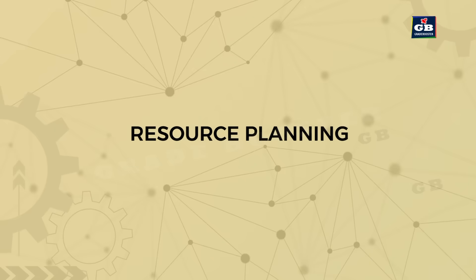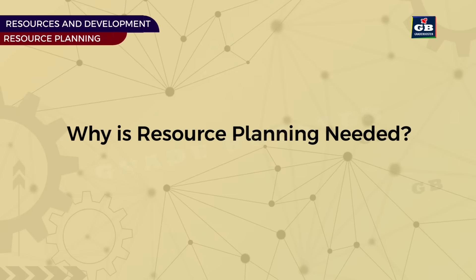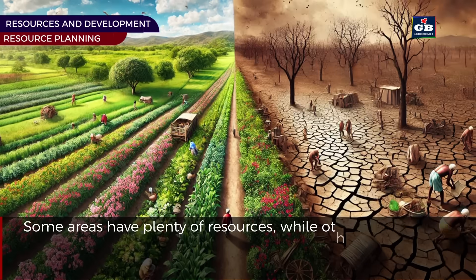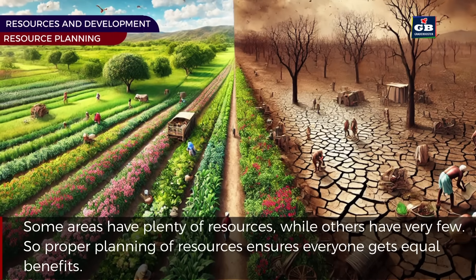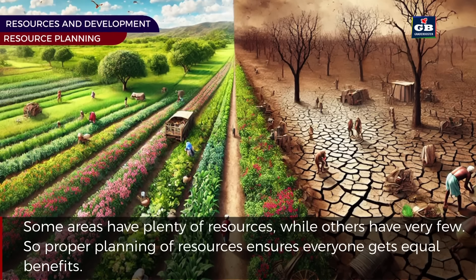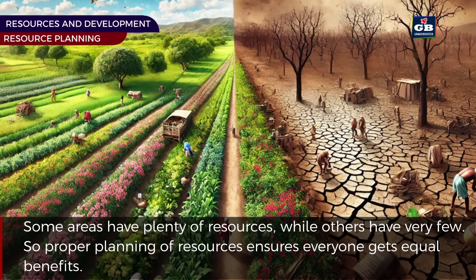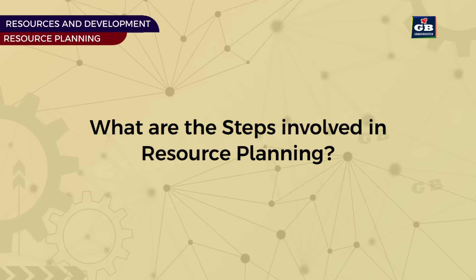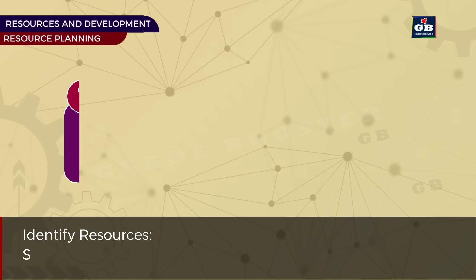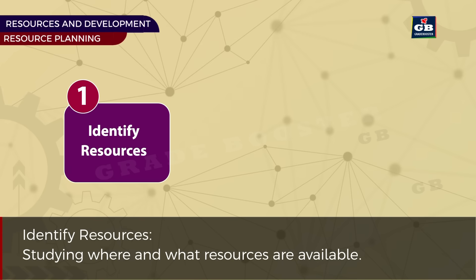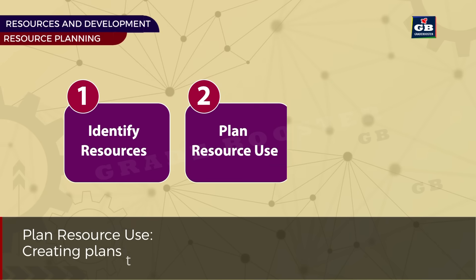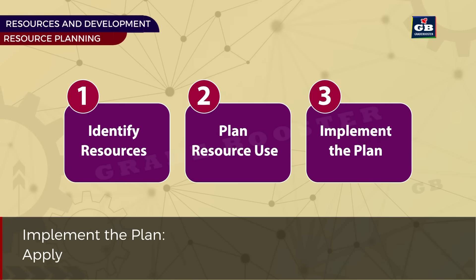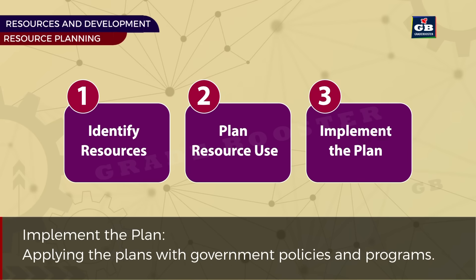Next we see resource planning. Why is resource planning needed? Some areas have plenty of resources while others have very few, so proper planning ensures everyone gets equal benefits. The steps involved in resource planning are: first, identify resources — studying where and what resources are available; second, plan resource use — creating plans to use resources efficiently; third, implement the plan — applying the plans with government policies and programs.